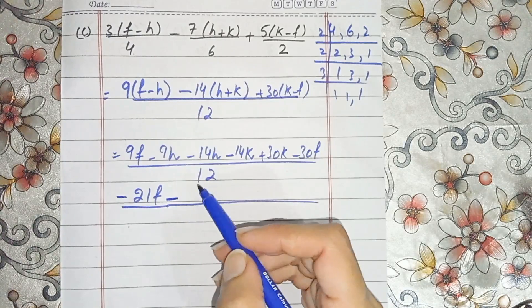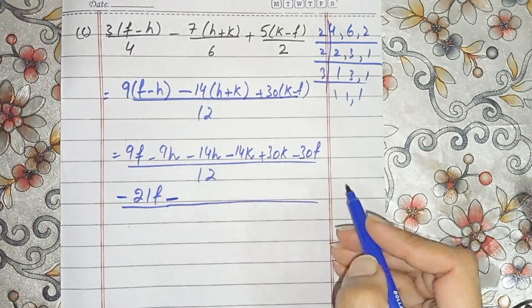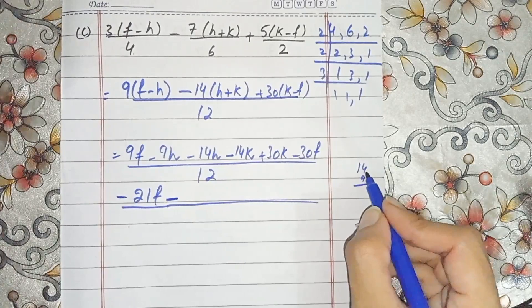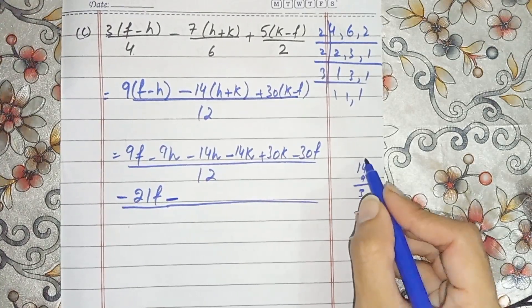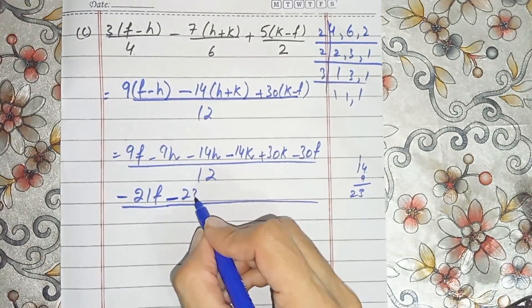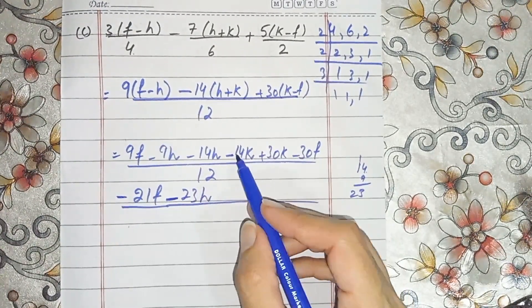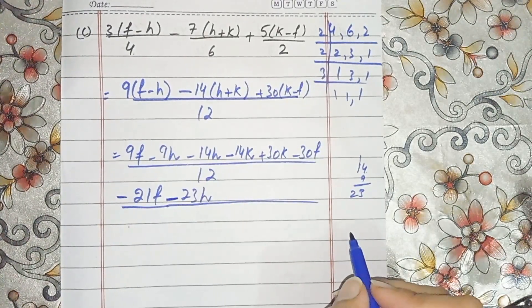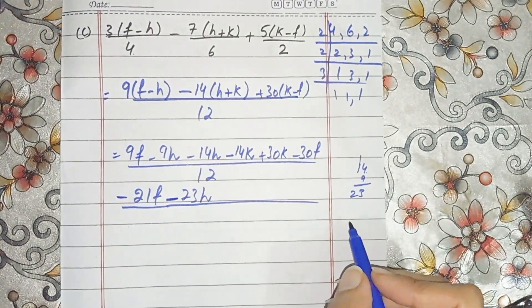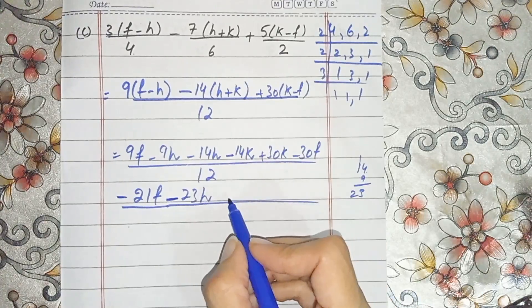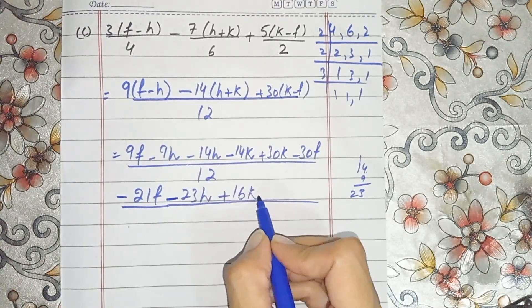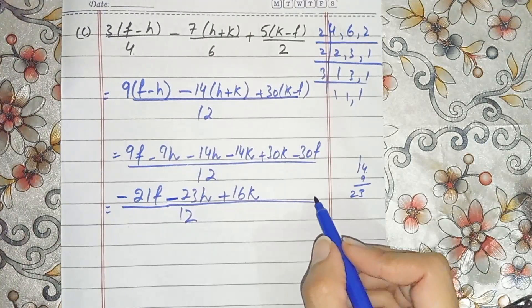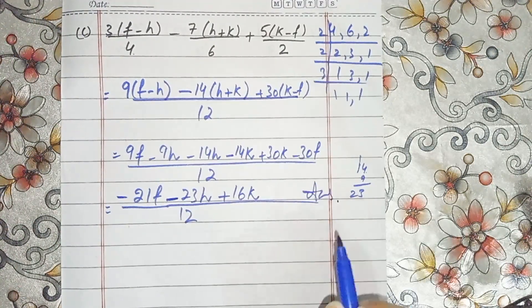For h values: both are negative so they add — 14 plus 9 gives 23h. For k: 30 minus 14 gives 16k. So the answer of part c is (minus 21f plus 23h plus 16k) over 12 — now it's solved.